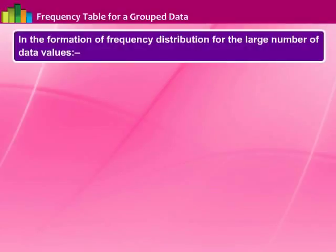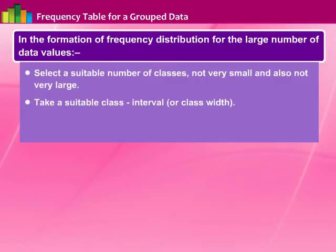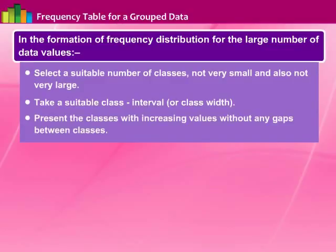In the formation of a frequency distribution for a large number of data values, we have to group the data first. For that, we should select a suitable number of classes — not very small and also not very large. We should take a suitable class interval or class width and present the classes with increasing values without any gaps between classes.